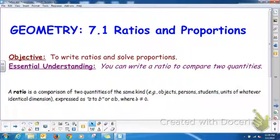A ratio is a comparison of two quantities of the same kind. So for example, if you're going to do objects, it's object to object, or person to person, or student to student. It has to be identical dimensions, so if you're going to express a ratio of measurement, you would have to express inches to inches,